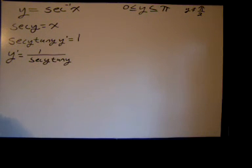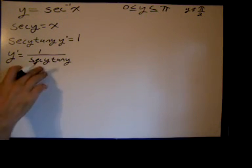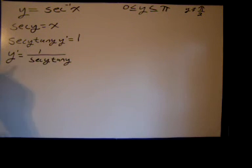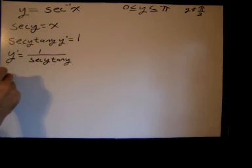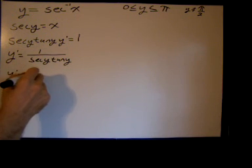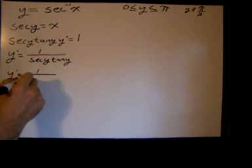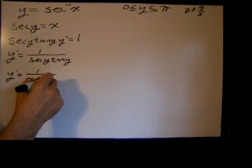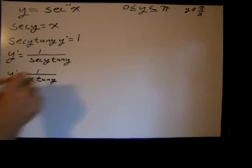Now we want to express this in terms of x. Since secant of y equals x, we can substitute and say y′ equals 1 over x times tangent of y.